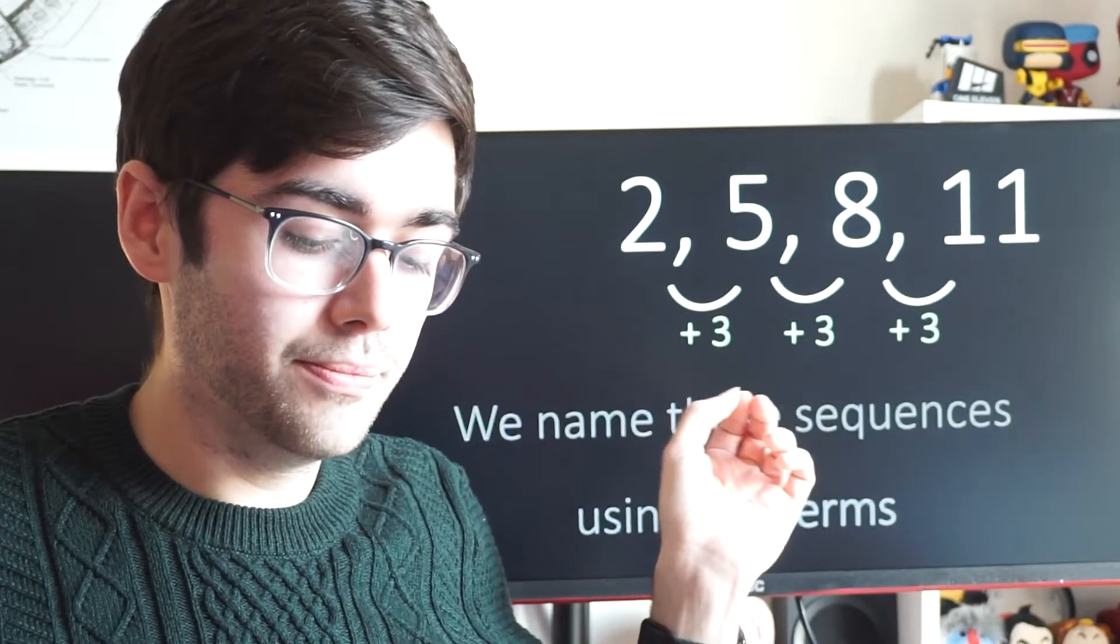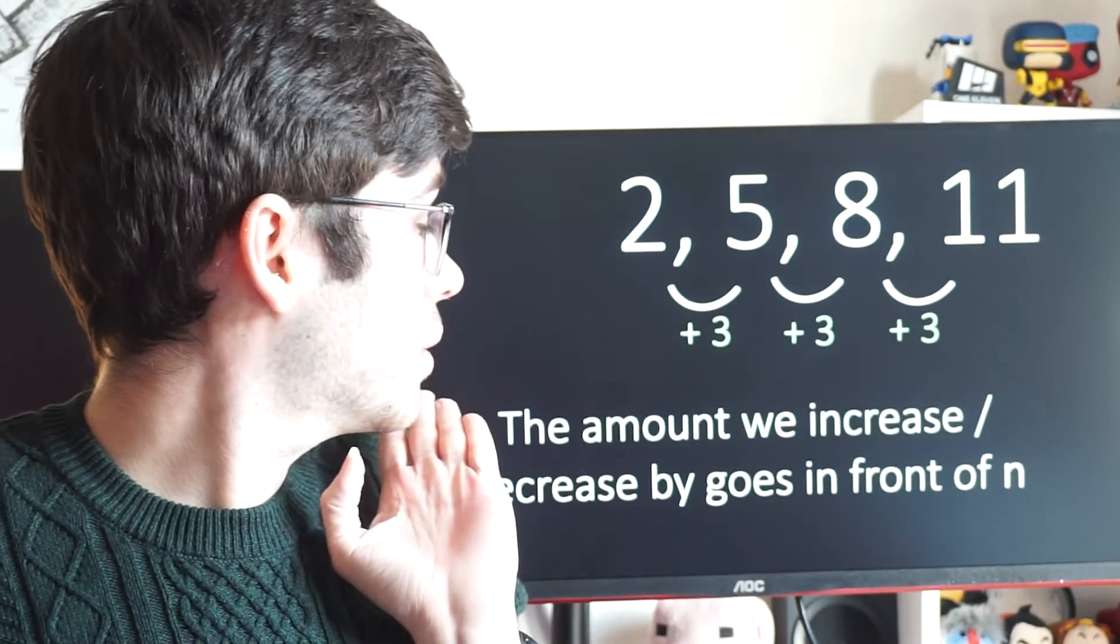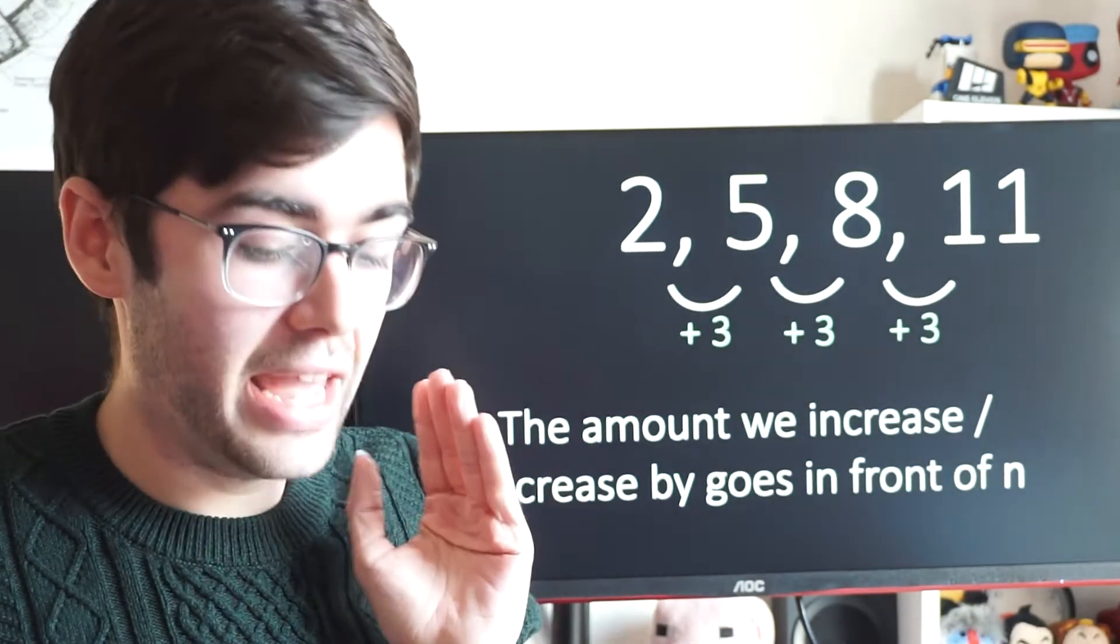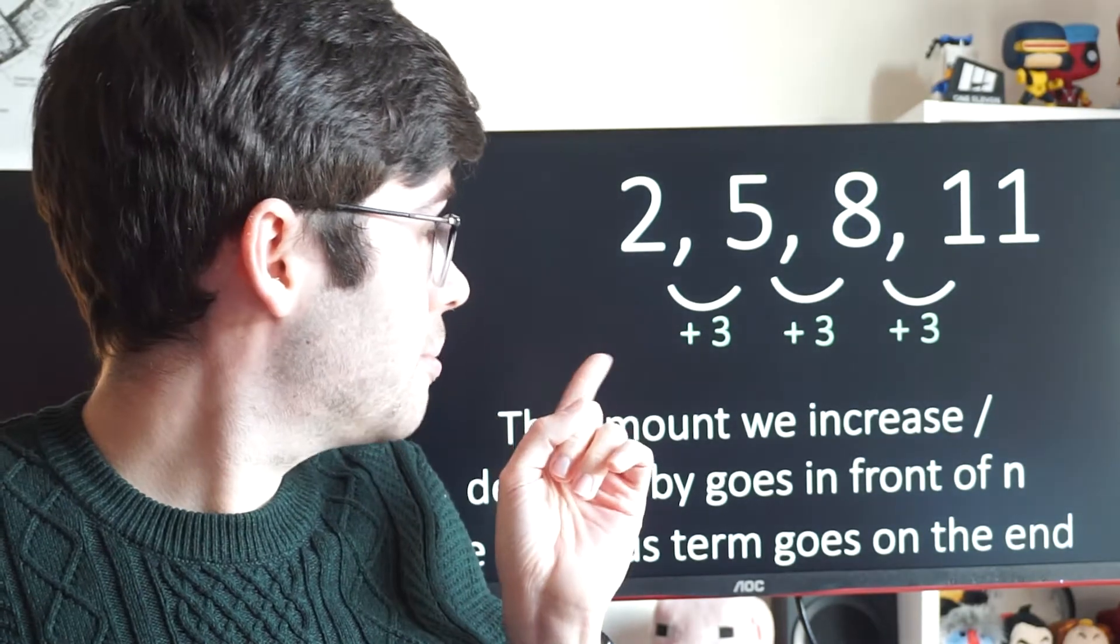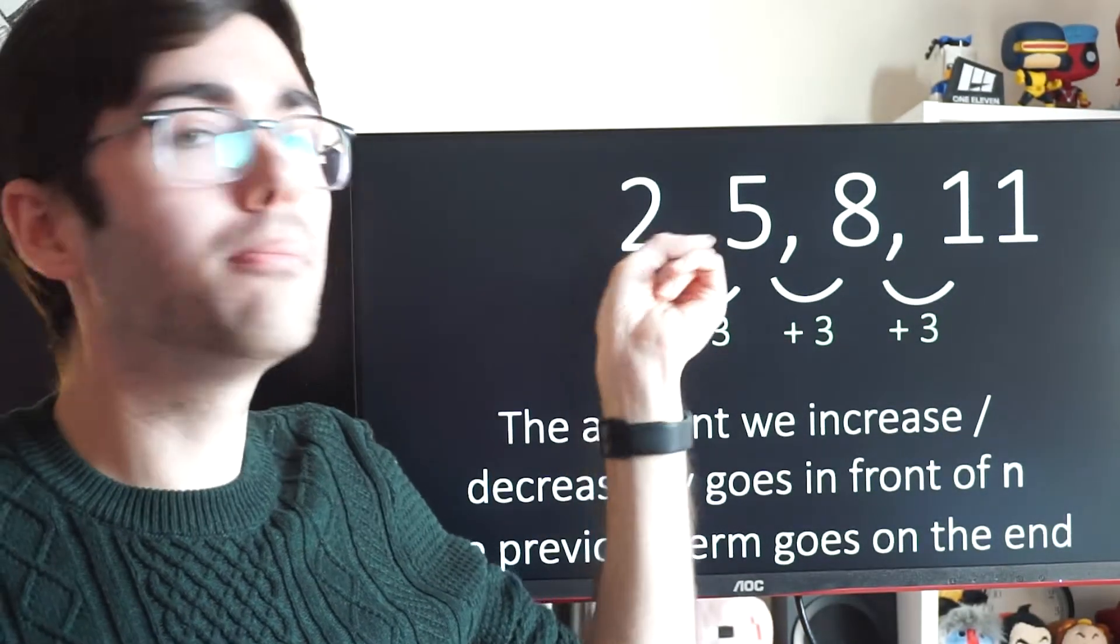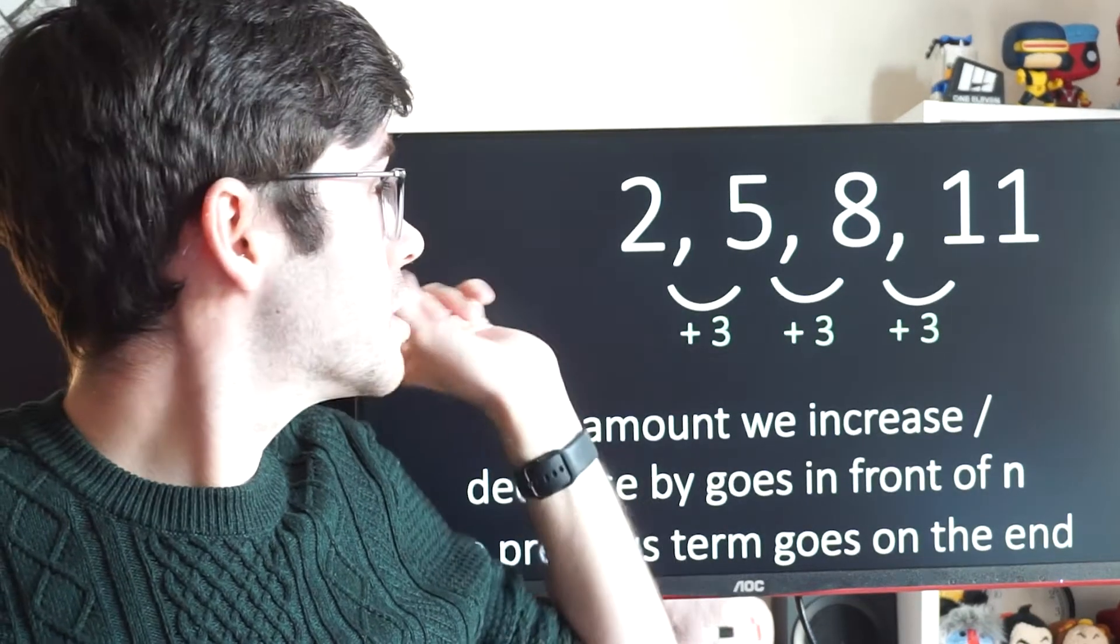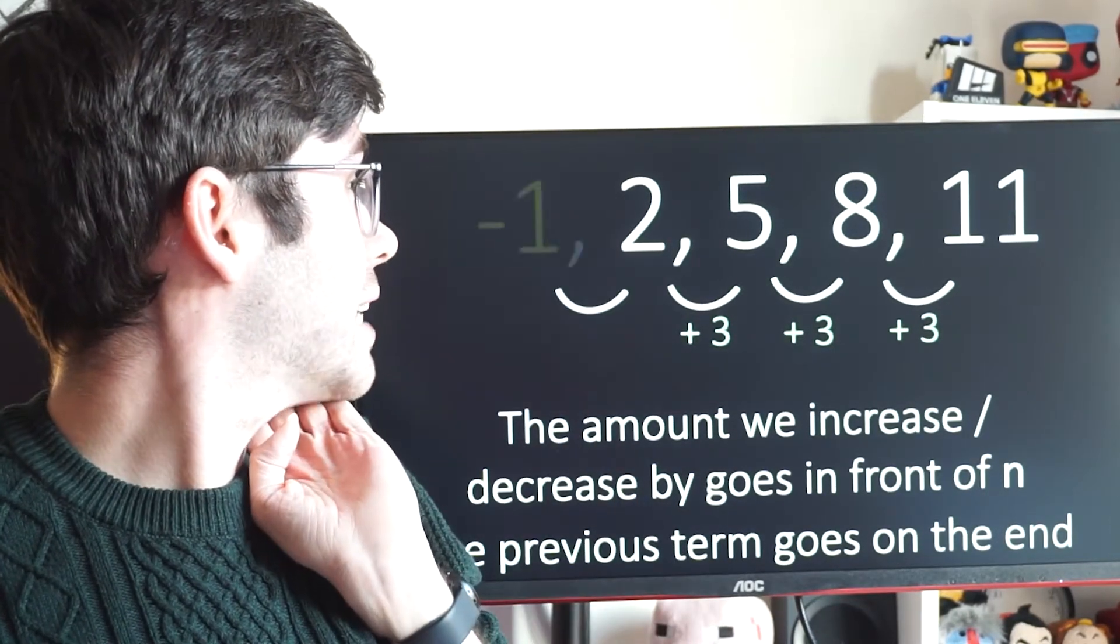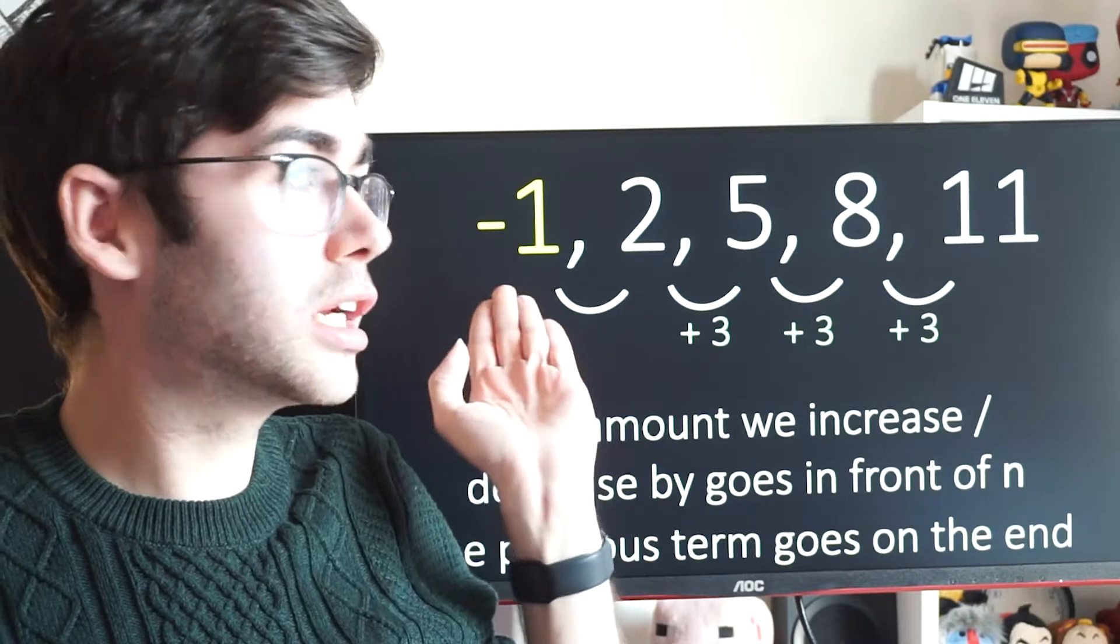So the amount we increase or decrease by, that goes in front of n. The previous term goes on the end. So if I go back one term, what would have come before 2? If we go back one term, if we take away 3, we'll get minus 1. And that's going to go on the end.